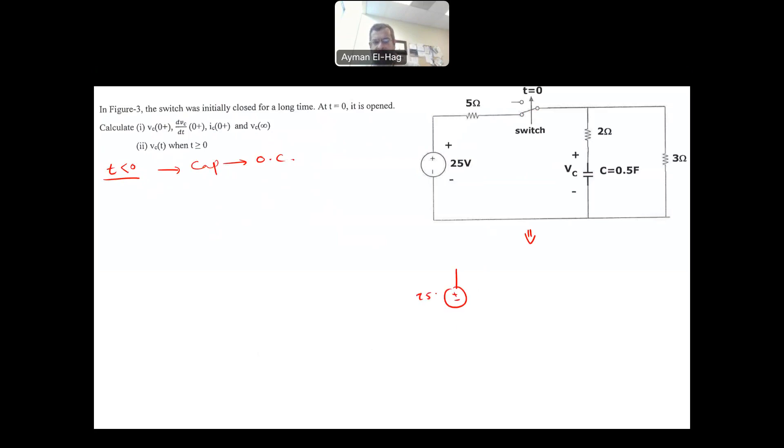So let me draw the circuit here. So we'll have here 25 volt, 5 ohm, the 2 ohm, and this is an open circuit. This is your VC at zero negative. Zero negative means before I change the switch position, and this here, 3 ohm. So if we analyze the circuit, if there's a current here, I. Here I know the current here is zero because it's an open circuit. So the current here is also I. So we have only one current.